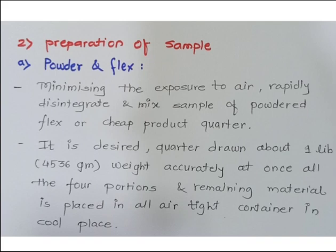The remaining material is placed in an airtight container or box in a cool place. So by this way we can prepare the powder and flax material — minimizing exposure to air and disintegration. A quarter is drawn about one pound, that is 4536 grams; weigh accurately all four portions and store the rest in a tight container in a cool place.